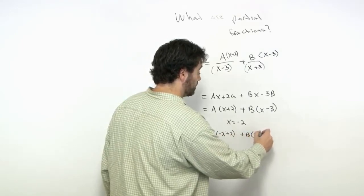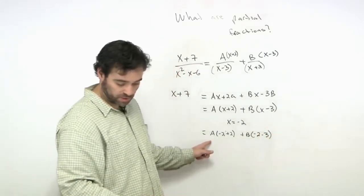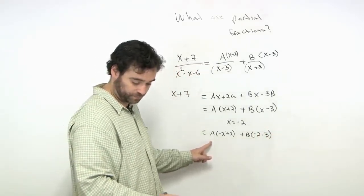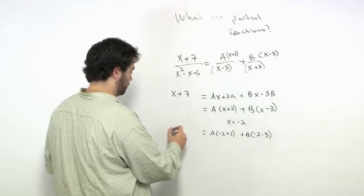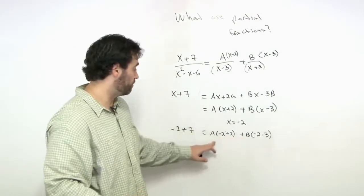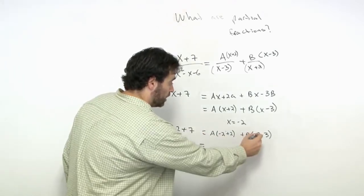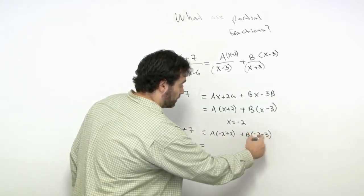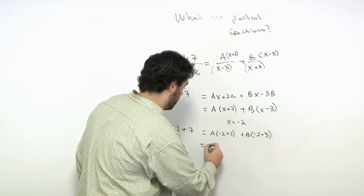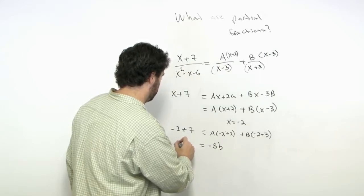To find B, when we plug in x = -2, the first term goes to zero. We get -2 - 3 = -5B.